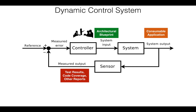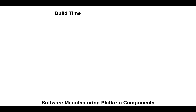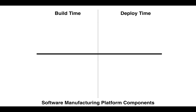Let's now look at the SMP and its various components. The platform is divided horizontally into two periods: build time and deploy time. Components in build time are responsible for ingesting and transforming the architectural blueprint — the source code — into a consumable application. Components in deploy time are responsible for instantiating a host environment and then deploying the application into it. The platform is also divided vertically into two layers: infrastructure and application. Components in the infrastructure layer are concerned with the host environment, whereas components in the application layer are concerned with the application itself.